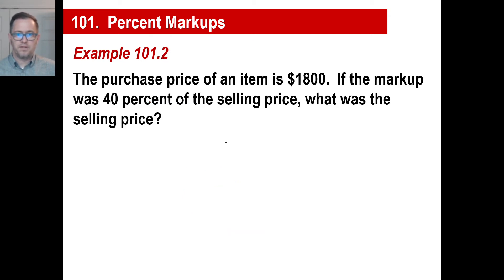Let's try another one. The purchase price is $1,800. If the markup is 40% of the selling price, what was the selling price? Again, anytime you get confused on these, visualize this first. You buy something for $1,800. The markup is going to be 40% of what you want to sell it for. Let's say your boss says, that's the profit margin we have to make. We have to make 40% on this thing to sell it. Okay, I need to figure out what it is. Well, you got the formula.